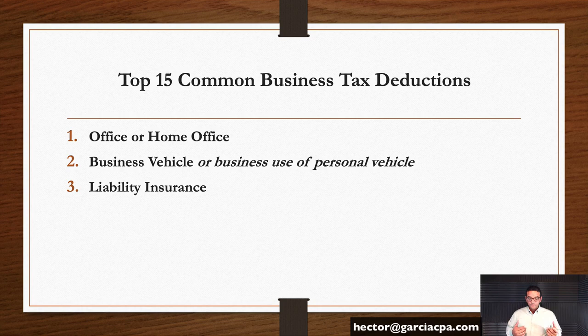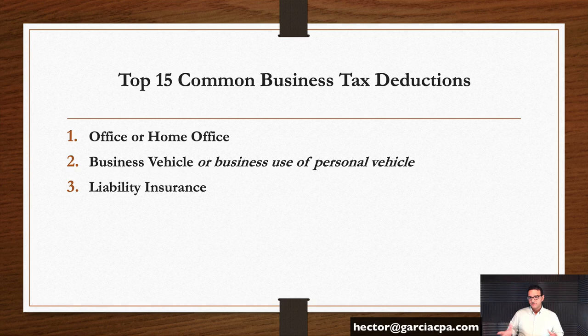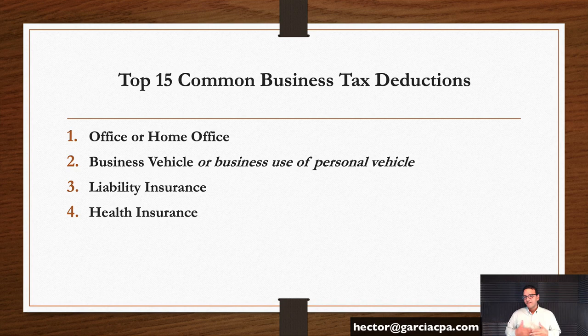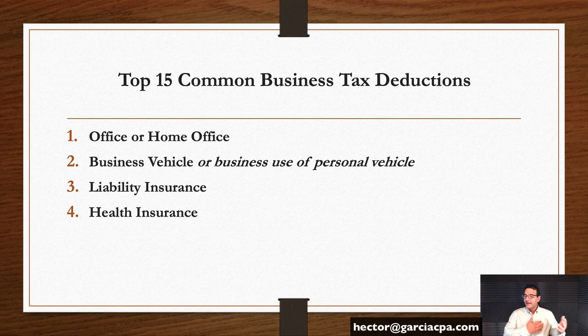Liability insurance: if you get insurance to protect your trade or business — general liability, workers' compensation for employees — that is deductible. Actual life insurance for the business owner is not deductible. Disability insurance where the beneficiary is the business owner or their family is also not deductible. Health insurance is a little tricky — most self-employed individuals can deduct their health insurance, but with an S corporation you have to include the cost in the W-2. The mechanics get tricky, but generally if you're a business owner paying health insurance for yourself, that will be deductible.